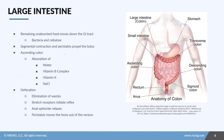Once food gets into the large intestine, this is where the remaining unabsorbed food is expelled from the body. The majority of this is bacteria and cellulose. Segmental contractions called haustrum occur — each haustrum fills and propels food along, continuing to move the bolus. In the ascending colon, this is where the majority of absorption of water, vitamin B complex, vitamin K, and sodium chloride occurs.